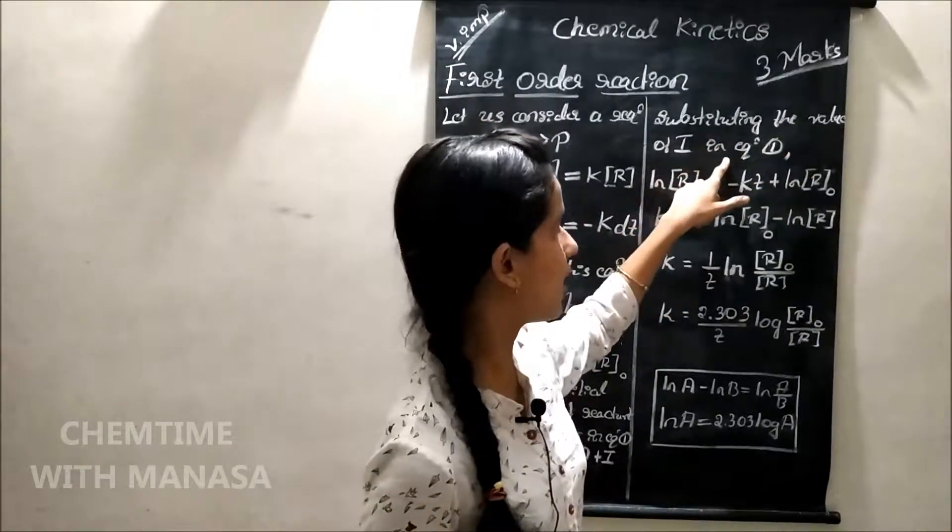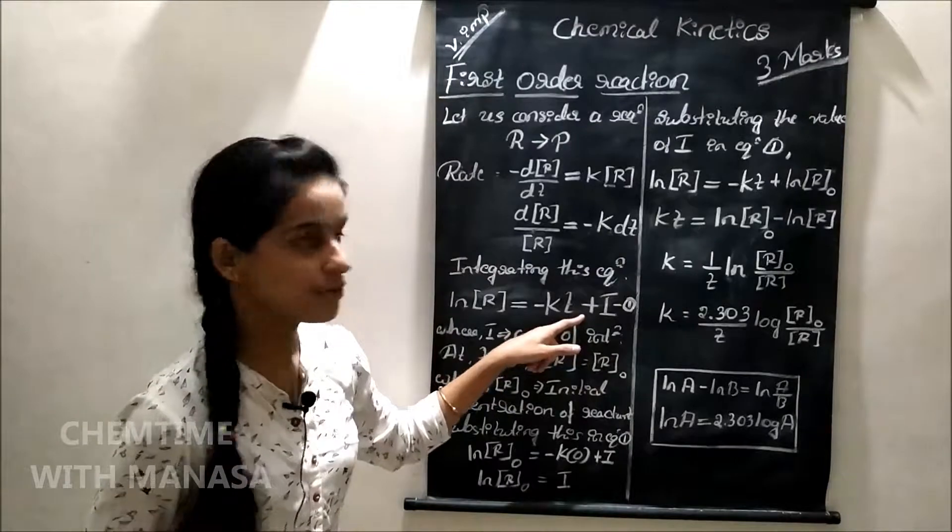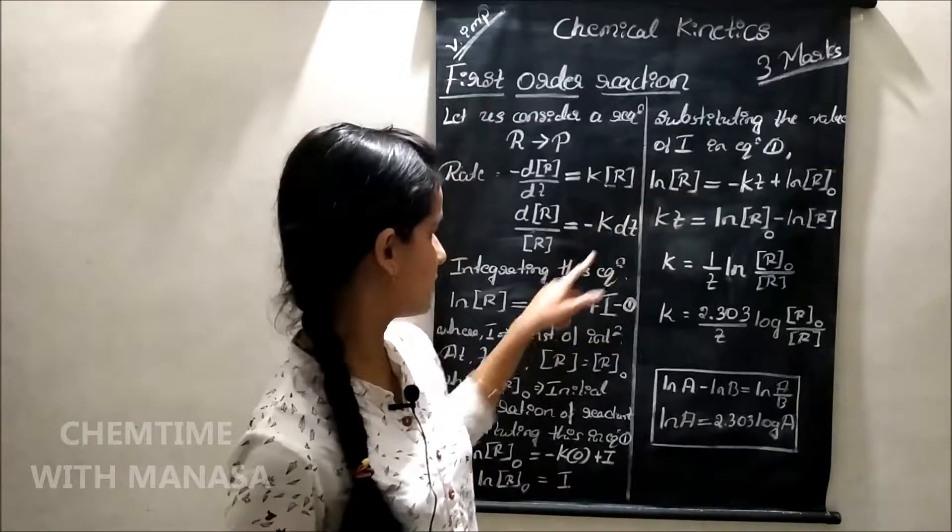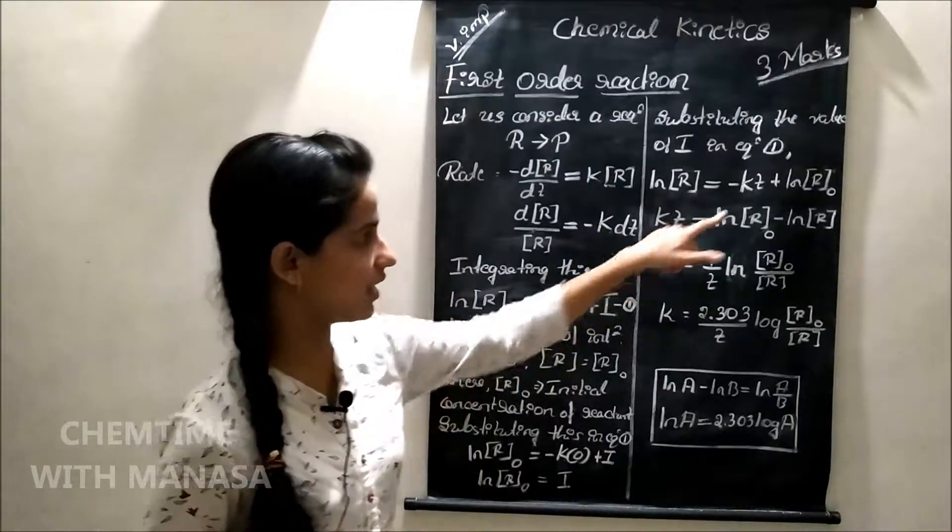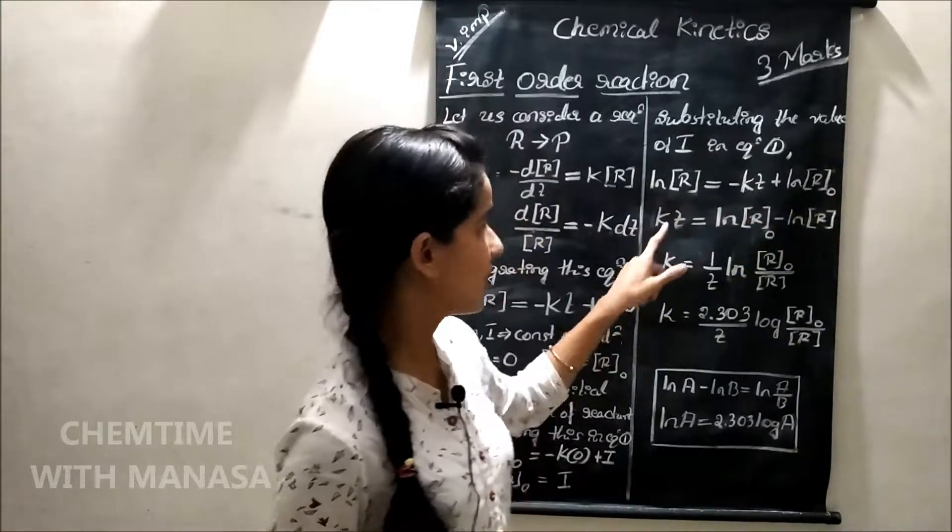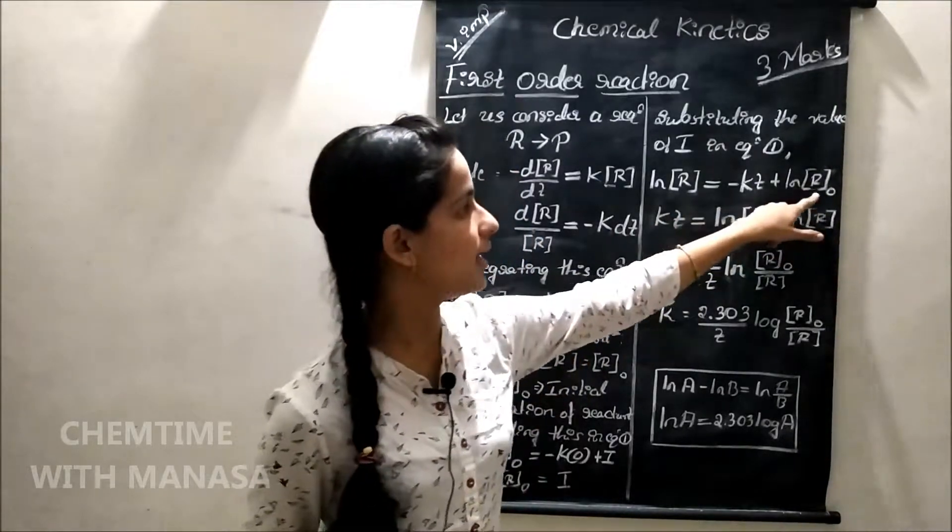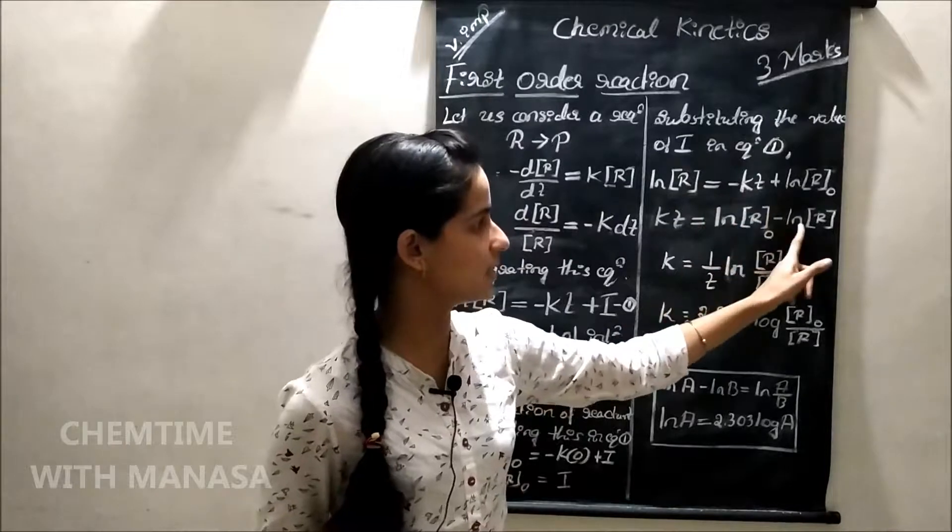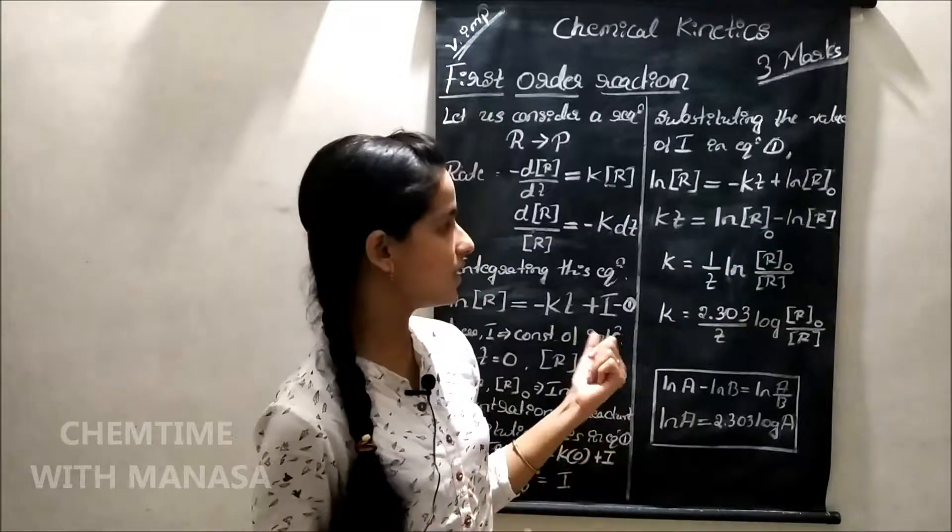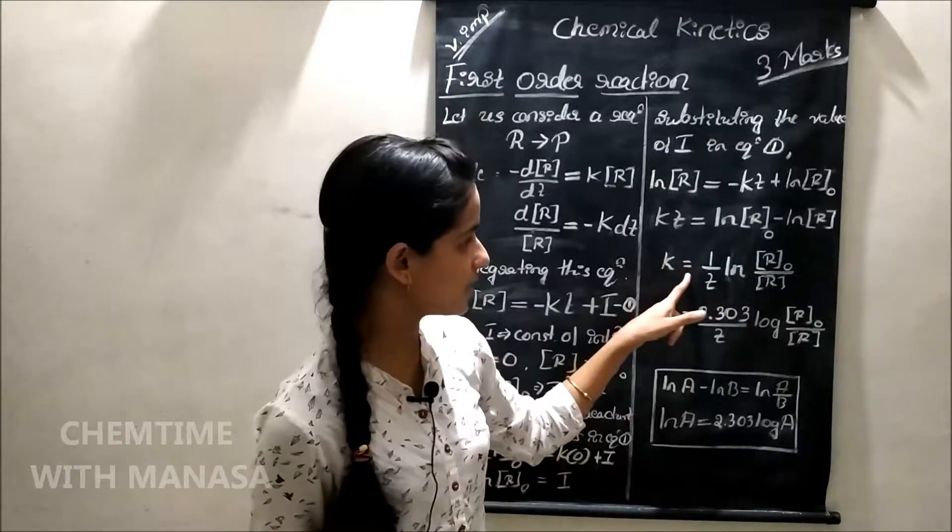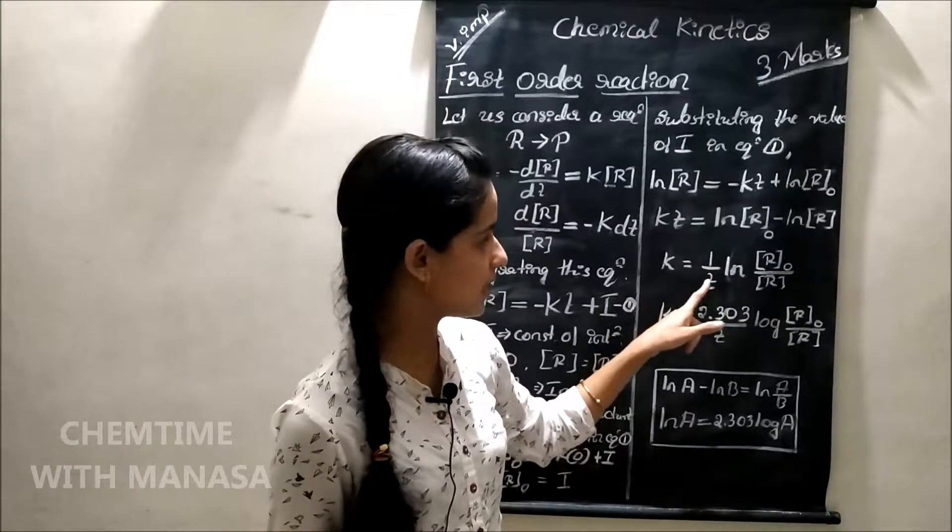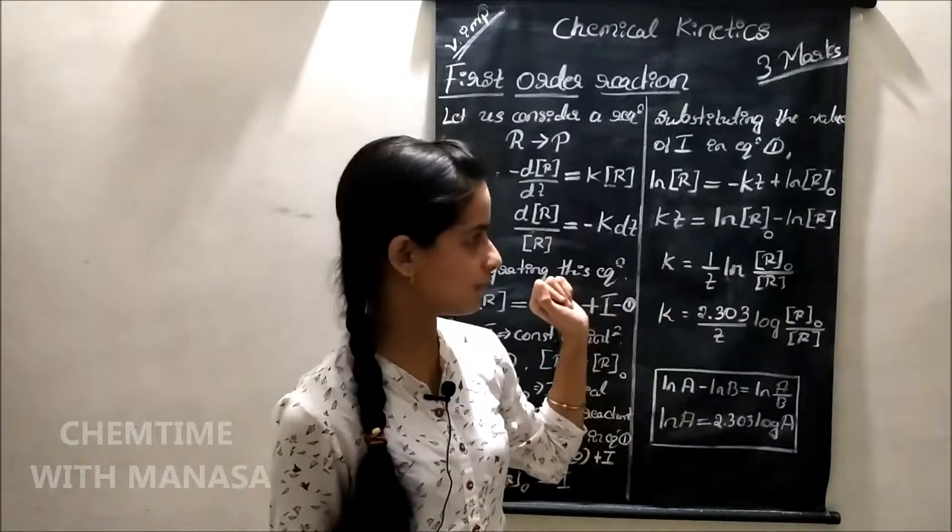Substituting the value of i in equation number 1, we get ln R is equal to minus Kt plus ln R naught. Kt is equal to ln R naught minus ln R. On rearrangement, we get K is equal to 1 by T ln R naught by R.